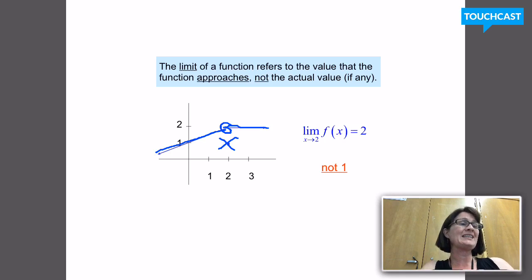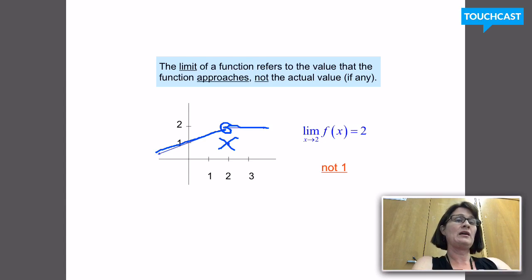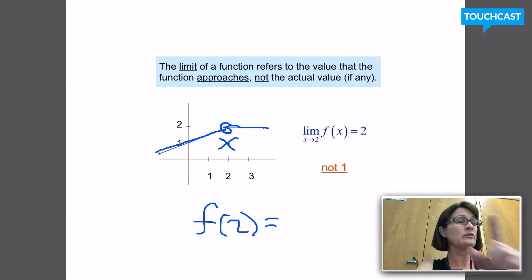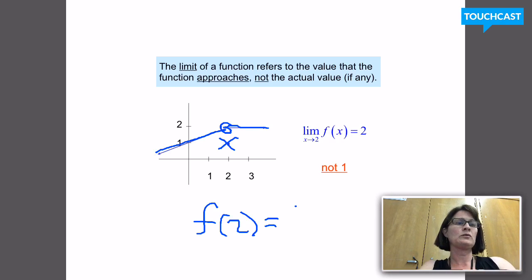So I would say the limit of f of x as x approaches 2 is 2. If you asked me what f of 2 is, I give a different answer — f of 2. The result is going to be the y value of the point that got colored in, and that's 1.